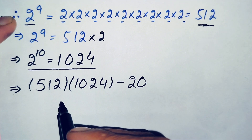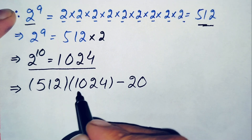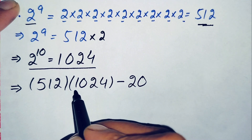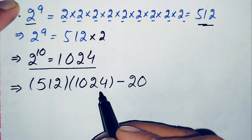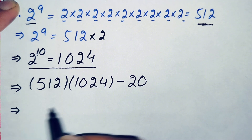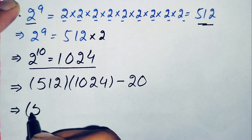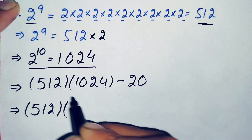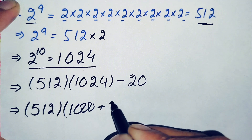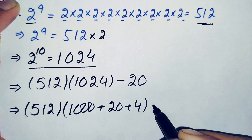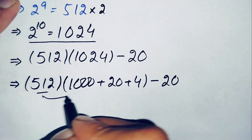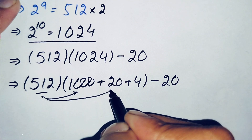Now how can we solve this equation further without using a calculator and without standard multiplication? Here there is a method to multiply these two numbers. That method is to change 1024 to the sum of three numbers: 1000 plus 20 plus 4. So this will become 512 times the sum of 1000 plus 20 plus 4, minus 20.